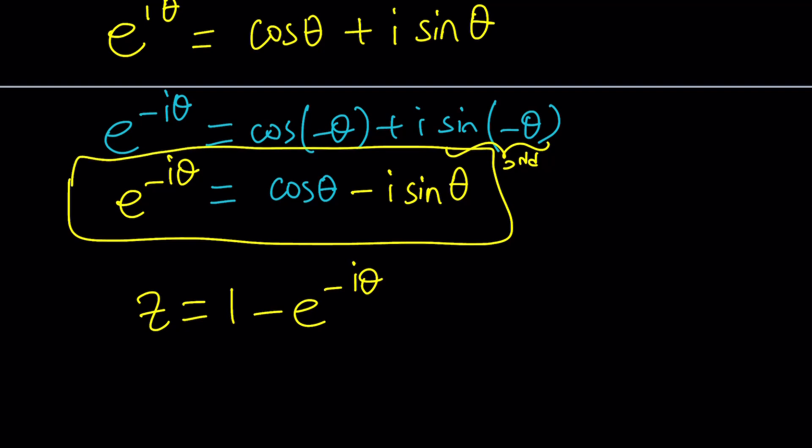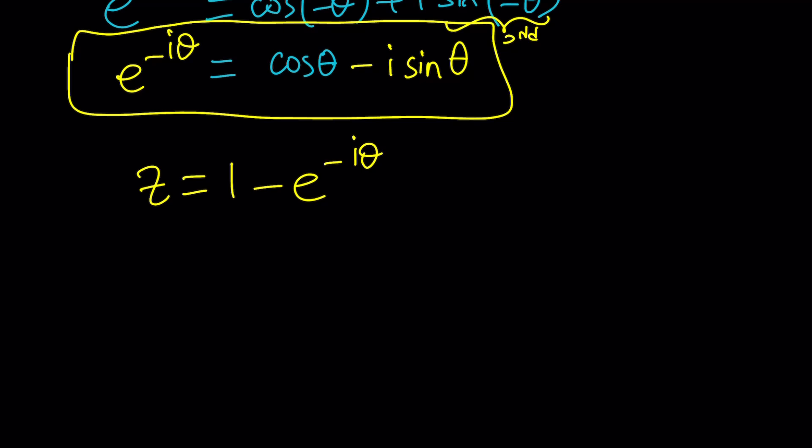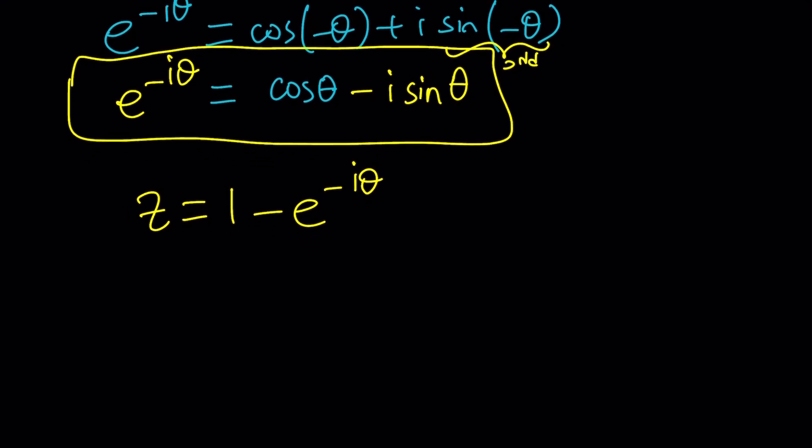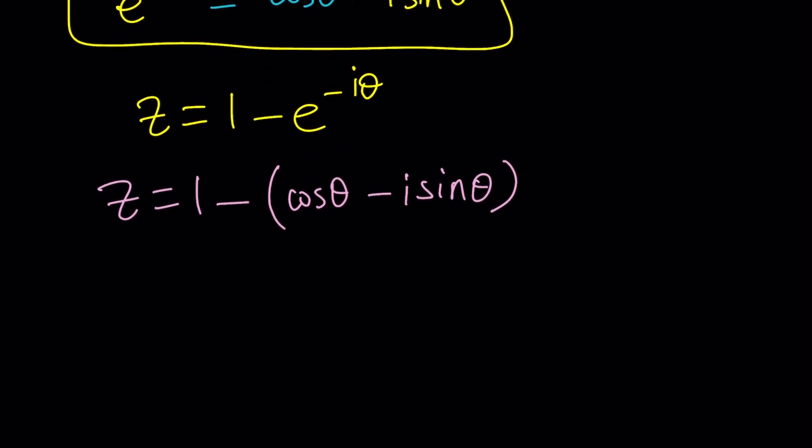I'm going to use the standard form because it's easier to work with. Here's what we're going to do. We're going to replace e to the power negative i theta with cosine theta minus i sine theta. This is the conjugate of cosine theta plus i sine theta. And when you multiply two conjugates, you always get a real number.